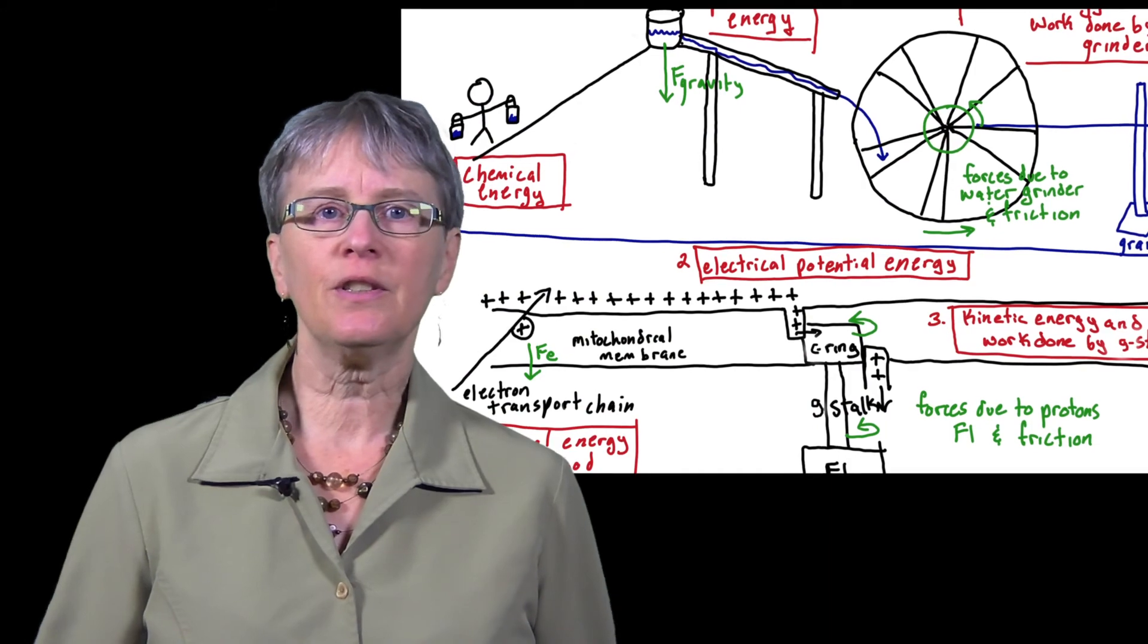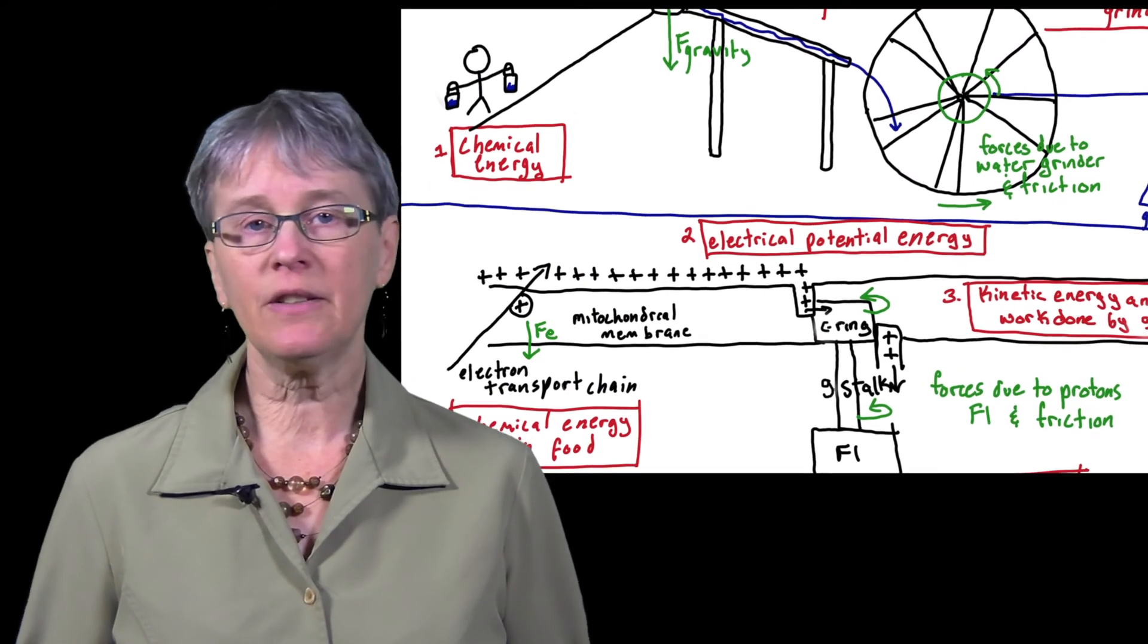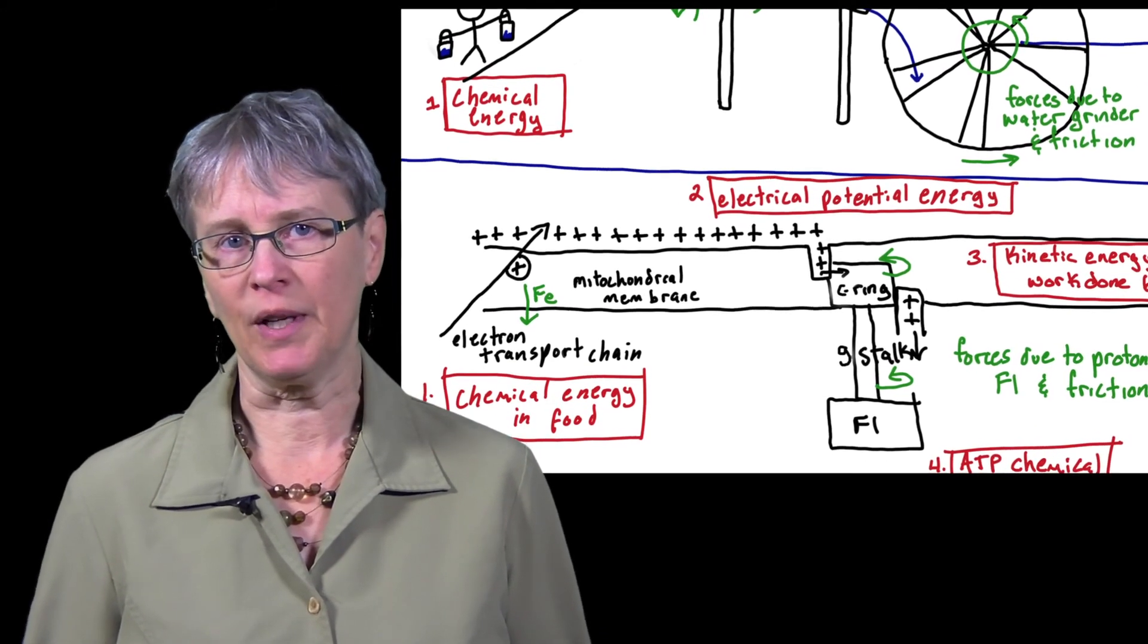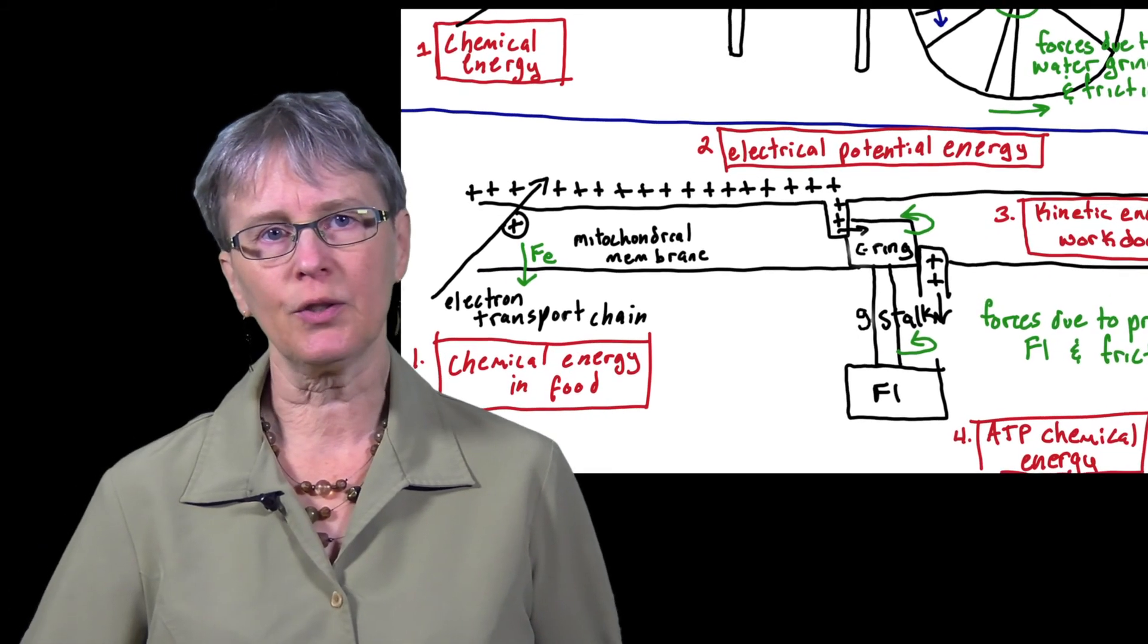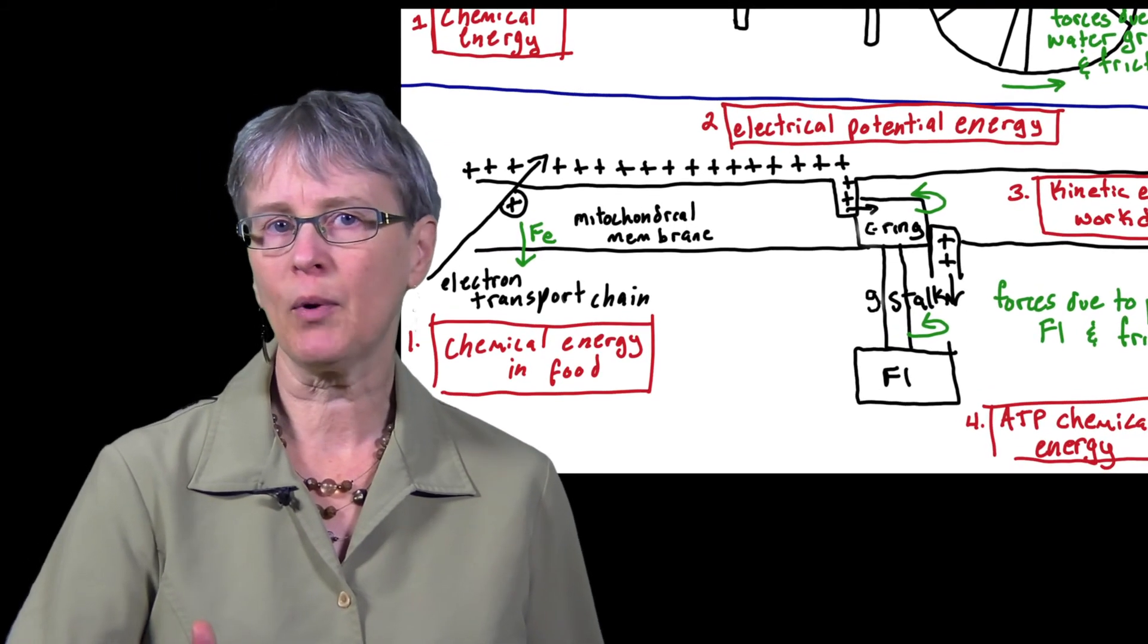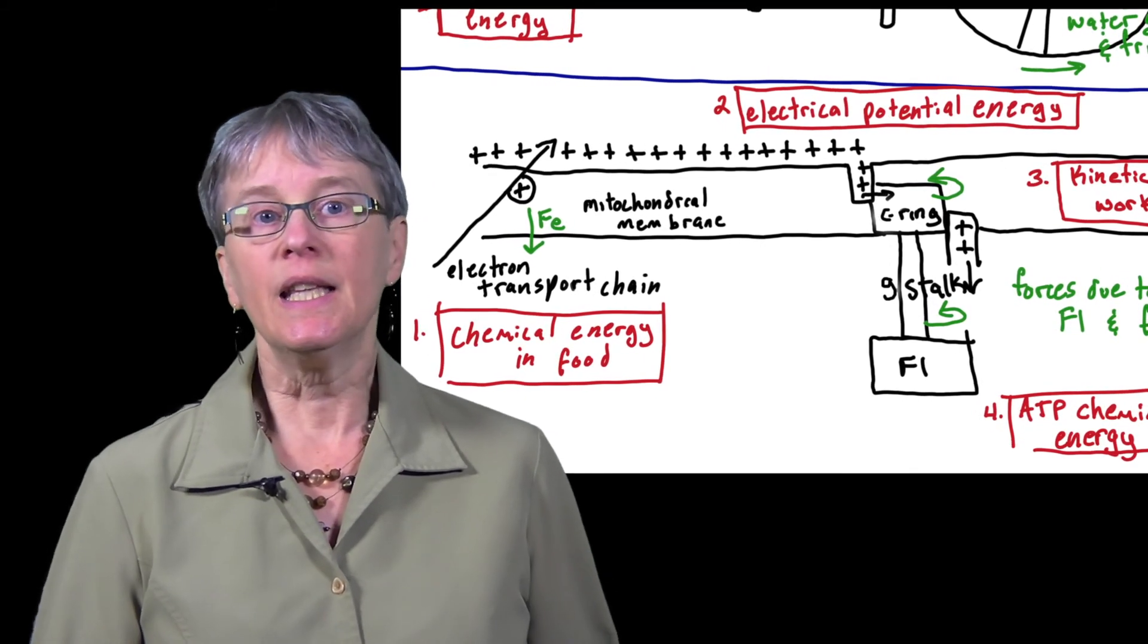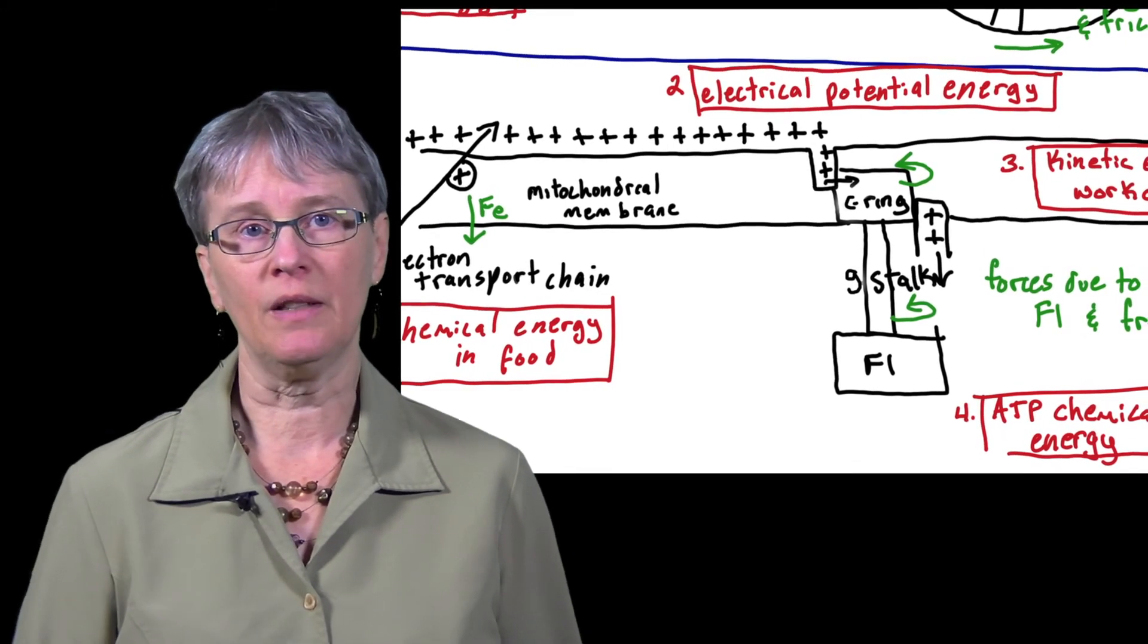Now we turn to the energy and forces picture of ATP synthase. The chemical energy in our food is used to move the protons across the mitochondrial membrane. This takes energy because the protons repel one another, so a proton being moved through the membrane experiences a force opposite to their motion. The energy from our food is now transformed into the electrical potential energy of the protons.